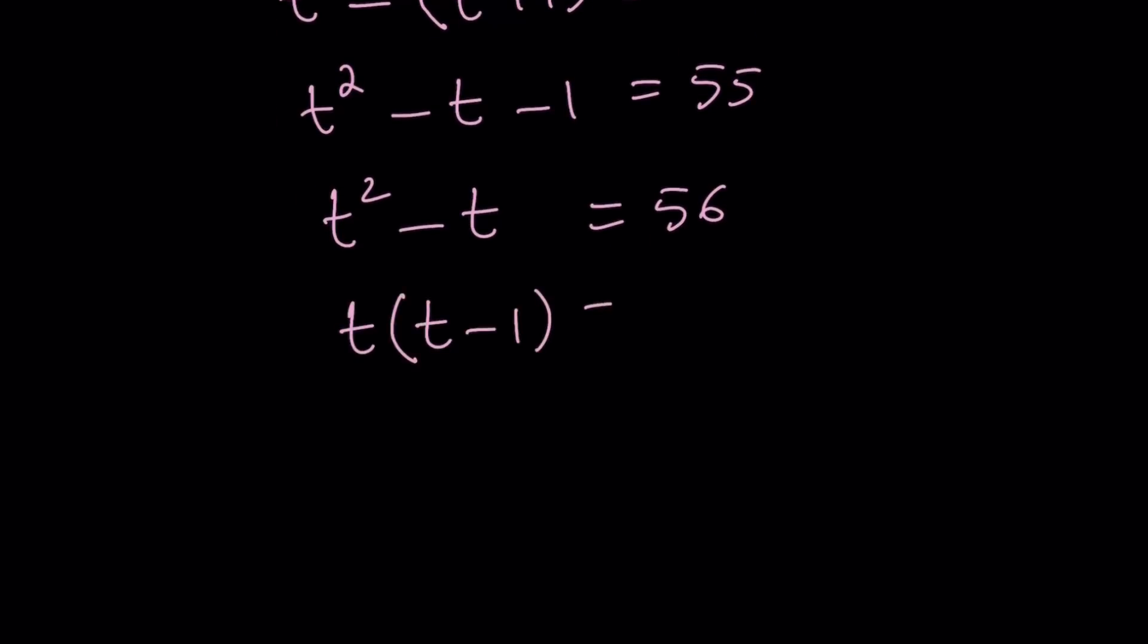So, t times (t - 1) = 56. Now, think about it. A lot of times we use this idea for solving exponential equations, logarithmic equations, or a mixture of different functions. But we could also use it for basic polynomials. 56 can be written as the product of two consecutive integers, such as t and t - 1. How about this? 8 times 7. Awesome.